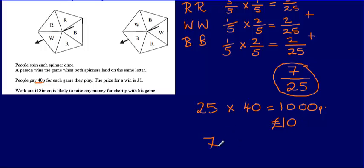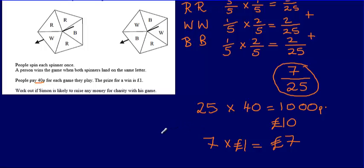Seven multiplied by £1 means you would expect to be paying £7 in prize money. So is Simon likely to raise any money for charity? Yes, he is — you can see that if 25 people play, you would expect to pay out £7 and make a £3 profit for every 25 people that play. The final written statement would be: yes, Simon is likely to raise money for charity because for every 25 people that play, you would expect a £3 profit.